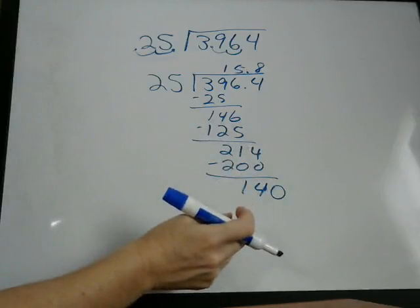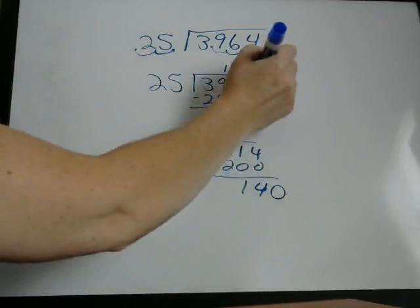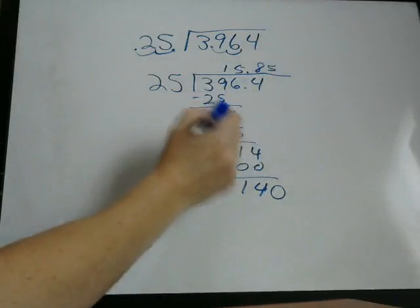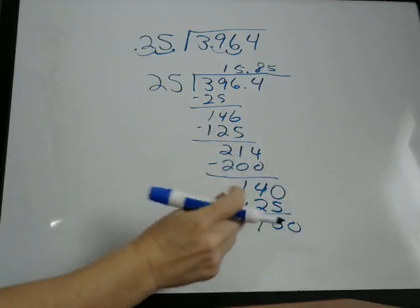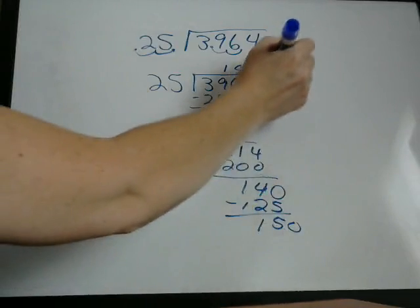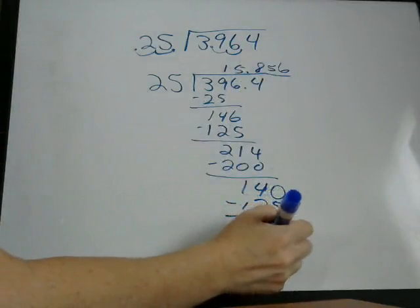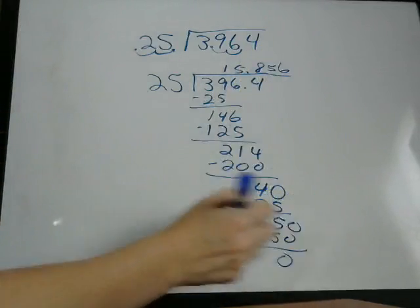14. We bring a zero down. 25 into 140 goes five times. 125. 25 into 150 goes six times. So that's our answer.